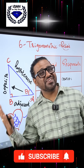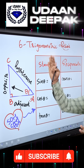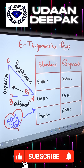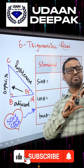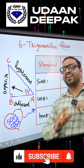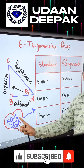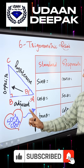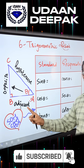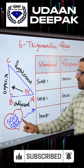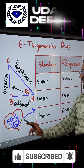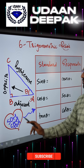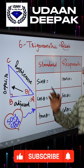Hello everyone, Yallari Namaskara. Now we will be seeing the six trigonometric ratios. You should remember the trick here. The trick is so kya to? Sine theta is opposite by hypotenuse, cos theta is adjacent by hypotenuse, and tan theta is opposite by adjacent.